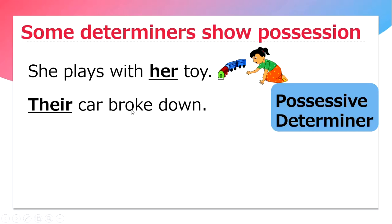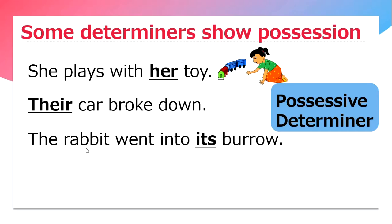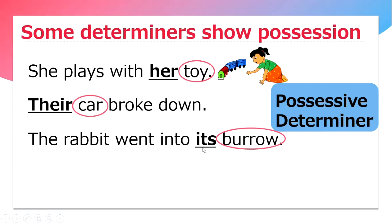Their car broke down. 'Their' again is showing possession — that car belongs to them. The rabbit went into its burrow. Here, 'its' is showing possession, that the burrow belongs to the rabbit. As you can see, all these determiners are coming in front of or before the noun.